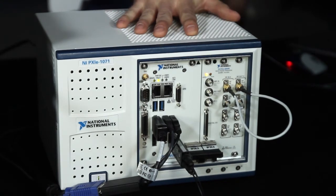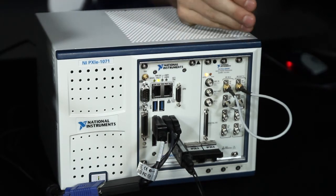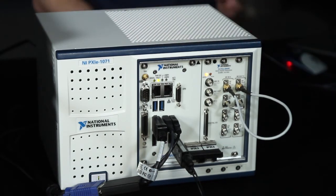Here we have the PXIE5644R Vector Signal Transceiver in a four-slot PXI Express chassis. We have it set up so the generator is looping back to the analyzer, and we're generating an 80 MHz bandwidth, 256-QAM, 802.11ac waveform. Let's take a look at what that measurement would look like.